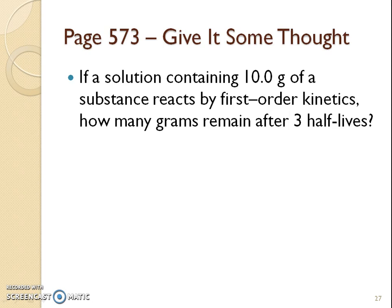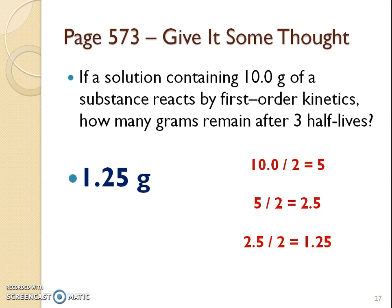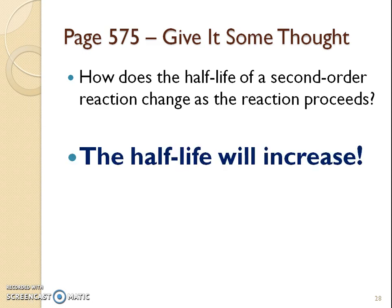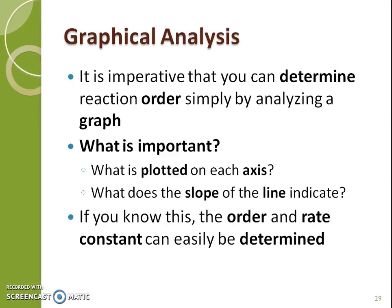Pause the video, read over the half-life problem, and see if you can get an answer before I give you the solution. The answer is 1.25. You take 10 divided by 2 — that's one half-life. 5 divided by 2 — that's the second half-life. 2.5 divided by 2 — that's the third half-life. Every time we divide the concentration in half, that's considered a half-life. So that would be one, two, three half-lives.